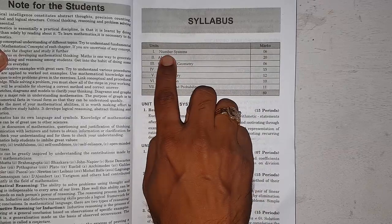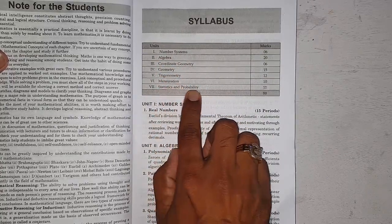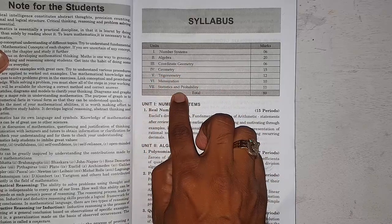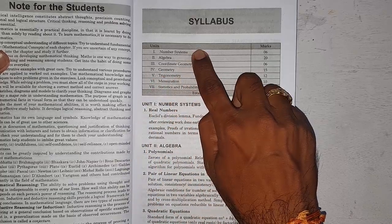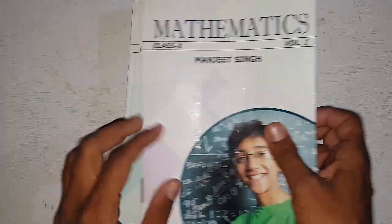CBSE has divided these parts into Number System, Algebra, Coordinate Geometry, Geometry, Trigonometry, Mensuration, and Statistics and Probability. From these, they selected three parts: Number System, Algebra, and Coordinate Geometry in Part 1, and the others in Part 2.